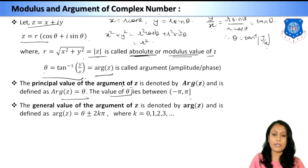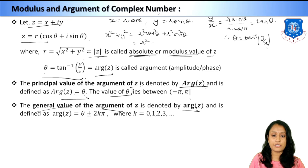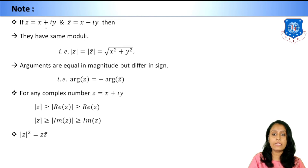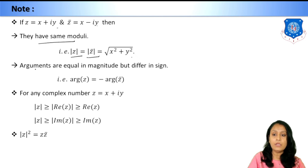Whenever we find the principal value of argument of z, its notation is Arg(z) = θ. The general value of argument of z, denoted arg(z), is defined as θ ± 2kπ, where k = 0, 1, 2, 3, and so on. For z = x + iy and its conjugate z̄ = x − iy, they have the same modulus |z| = |z̄| = √(x² + y²), but their arguments are equal in magnitude and opposite in sign: arg(z) = −arg(z̄).